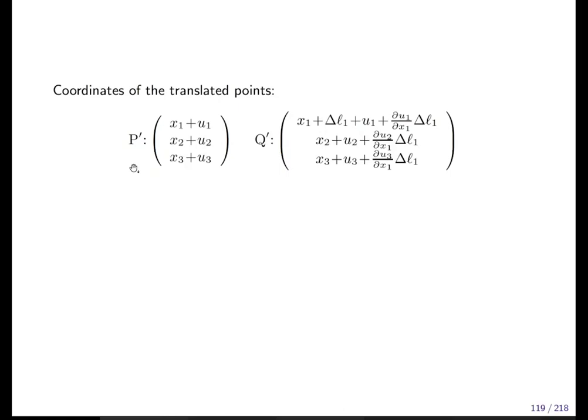Now the point P prime and Q prime, this is just the position where point P started plus the vector. This is vector addition. Point Q prime is the position where we started plus Δl₁ to go from P to Q, plus the displacement in point Q.